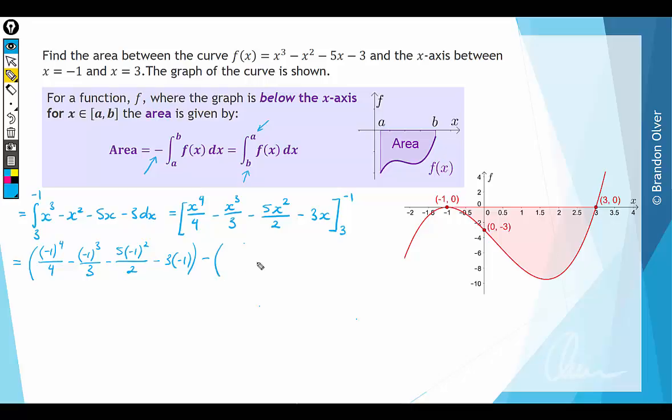Then we subtract away the anti-derivative with 3 substituting in. So we have 3 to the power of 4 over 4, minus 3 to the power of 3 over 3, minus 5 times 3 squared over 2, minus 3 times 3.